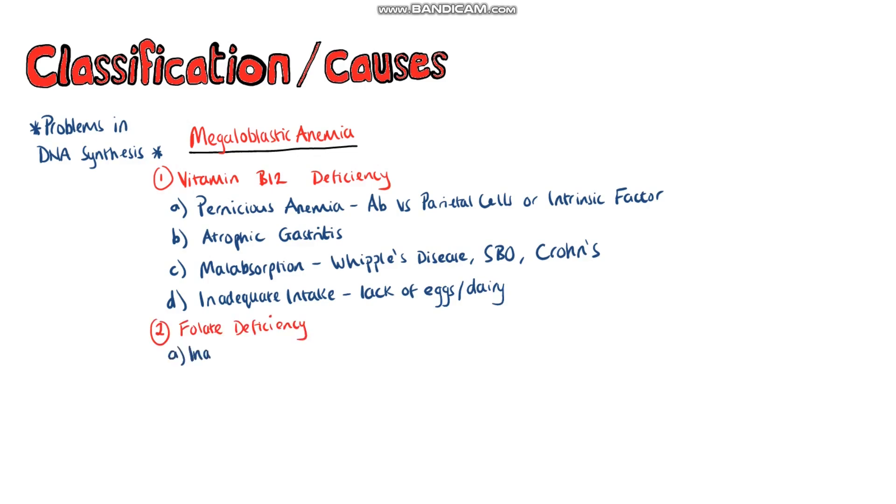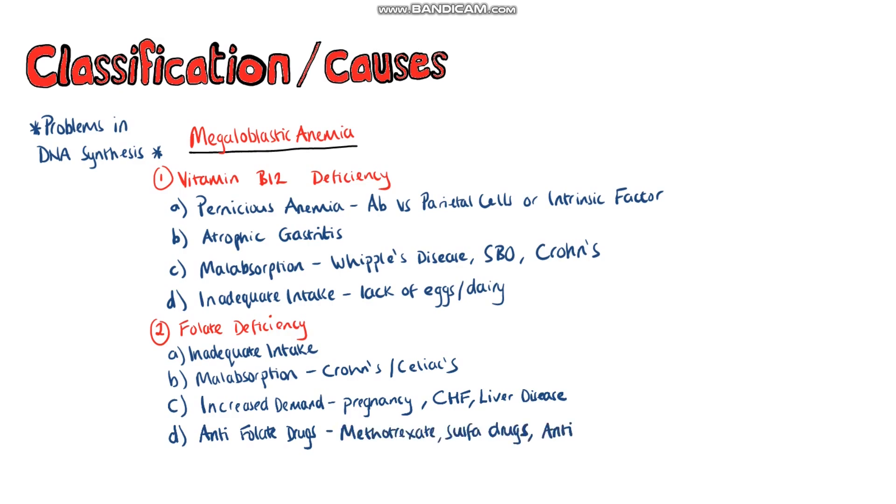Folate deficiency mostly comes from a diet deficient in fruits and vegetables, but can also be caused by malabsorption, such as in Crohn's and Celiac's disease. It can also be caused by an increase in demand. The biggest one is pregnancy, and this is due to the folate catabolism that occurs. Congestive heart failure and liver disease can also lead to increased demand due to the release of folate from damaged cells. Finally, there are some anti-folate drugs, such as methotrexate, sulfa drugs, or anti-seizure medication like phenytoin and barbiturates. Alcohol may also interfere with folate metabolism.